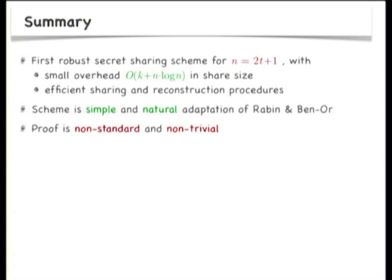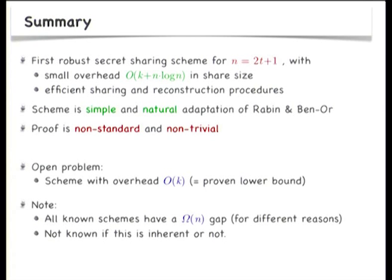In summary, we showed the first robust secret sharing scheme for n equals 2t plus 1 with a small overhead in share size — order k plus n rather than k times n as in Rabin-Benor — and with efficient sharing and reconstruction procedures. The scheme is a simple and natural adaptation of Rabin-Benor but the proof turns out to be non-standard and non-trivial. It's still not clear if we can squeeze the overhead down to the proven lower bound of order k. We now have two schemes getting close to it, but both feature a gap that is linear in n to the proven lower bound, for different technical reasons, so it's not clear whether this gap is inherent or not.